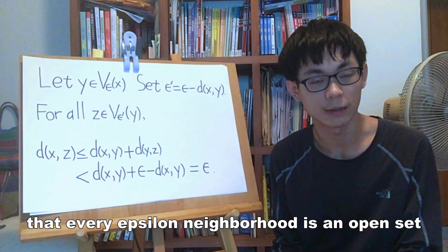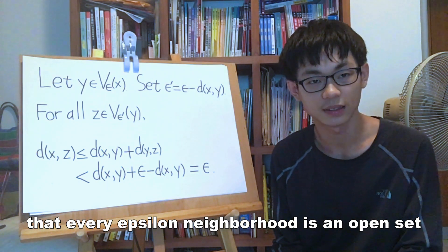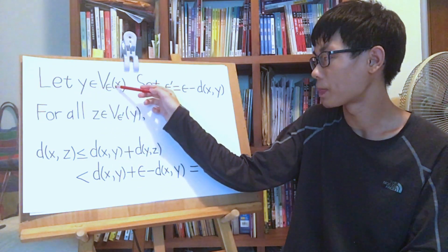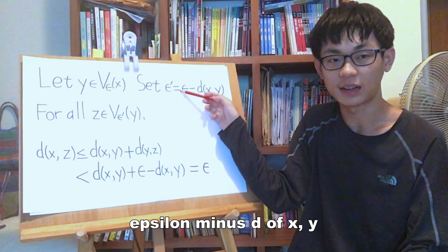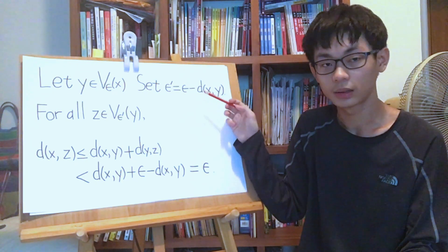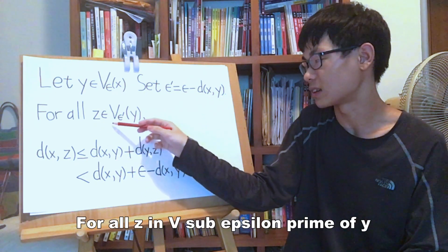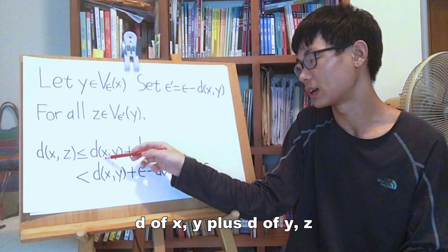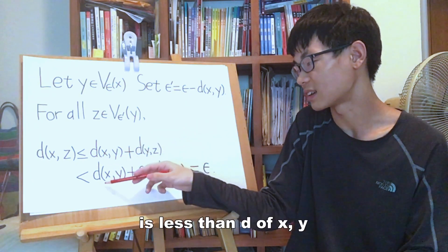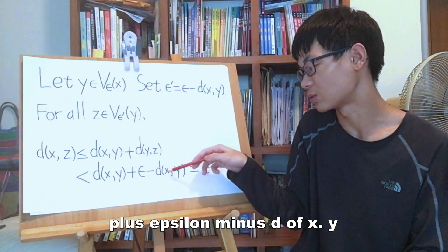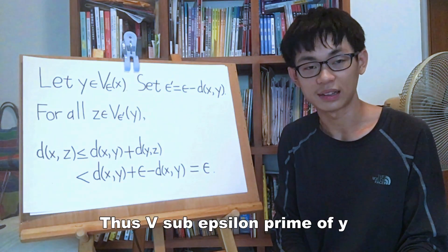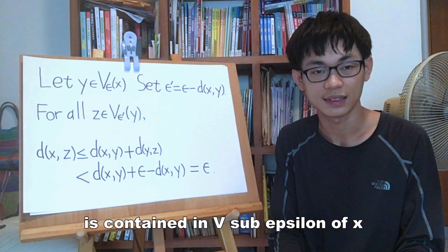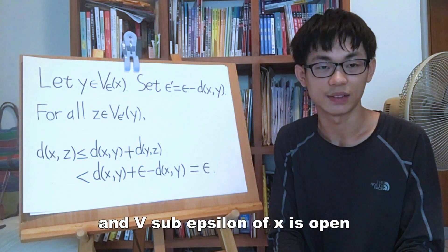Now we show that every epsilon neighborhood is an open set. Let y be an element of V_epsilon(x). Set epsilon prime equals epsilon minus d(x, y). For all z in V_epsilon_prime(y), d(x, z) is less than or equal to d(x, y) plus d(y, z), which is less than d(x, y) plus epsilon minus d(x, y) equals epsilon. Thus, V_epsilon_prime(y) is contained in V_epsilon(x), and V_epsilon(x) is open.